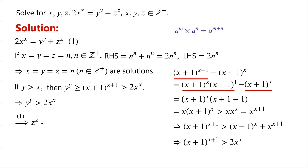From equation 1, we have z to the power of z equals 2 times x to the power of x minus y to the power of y, which is less than 0. Since z to the power of z less than 0 is impossible, therefore y must be less than or equal to x.